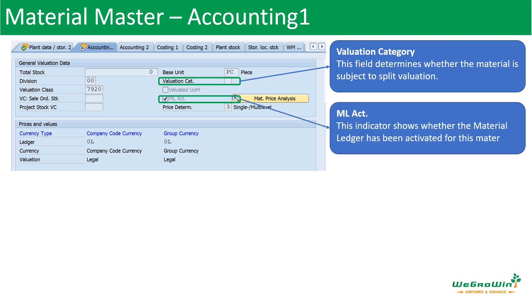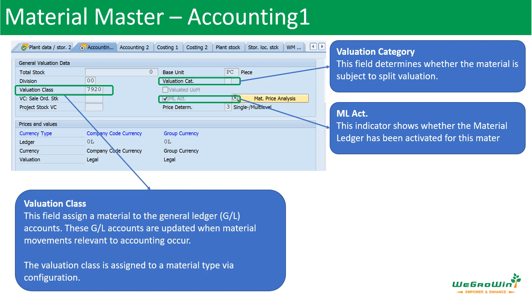Material Ledger Active indicates whether the material ledger has to be activated for the material. It is the basis for actual costing and enables material inventories to be evaluated in multiple currencies. Valuation class is the detail that assigns a material to the general ledger accounts. GL accounts are updated when material movements relevant to accounting occur. The valuation class is assigned to the material type through configuration, which we'll discuss later when covering normal MM transactions.